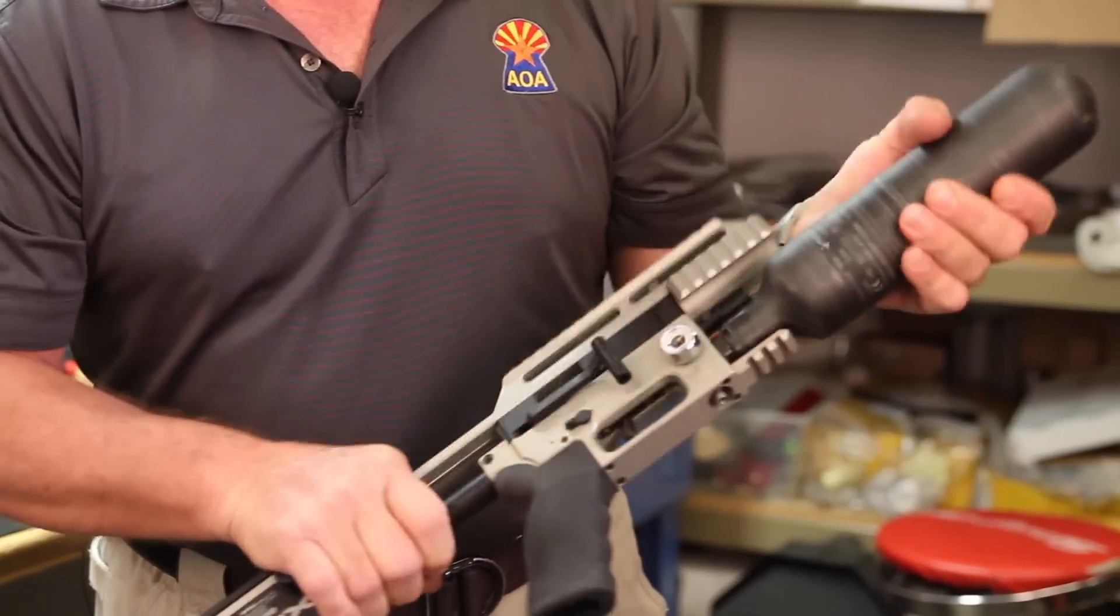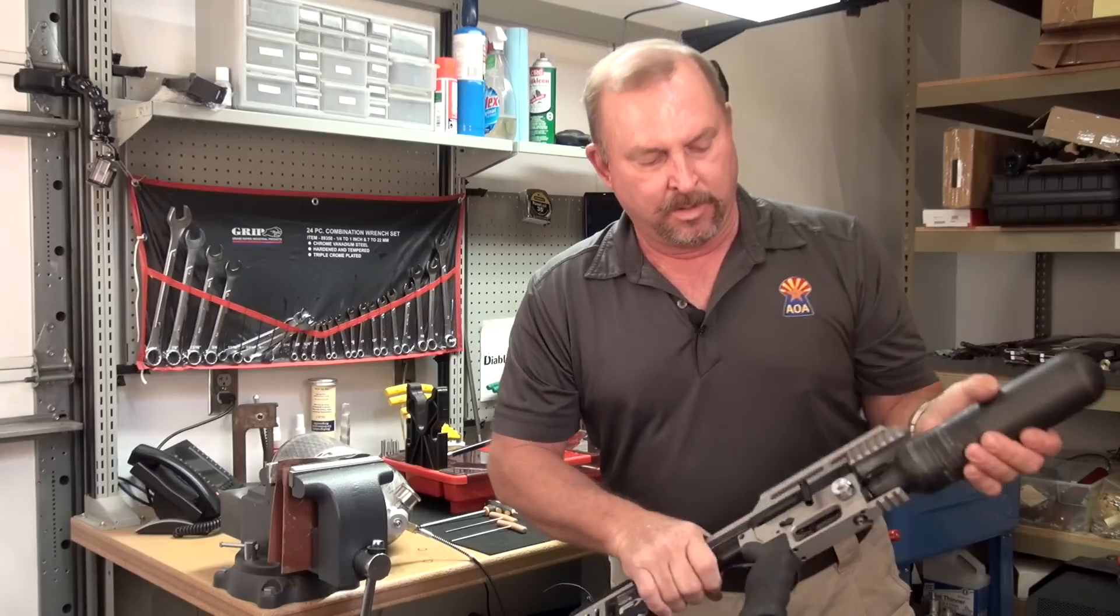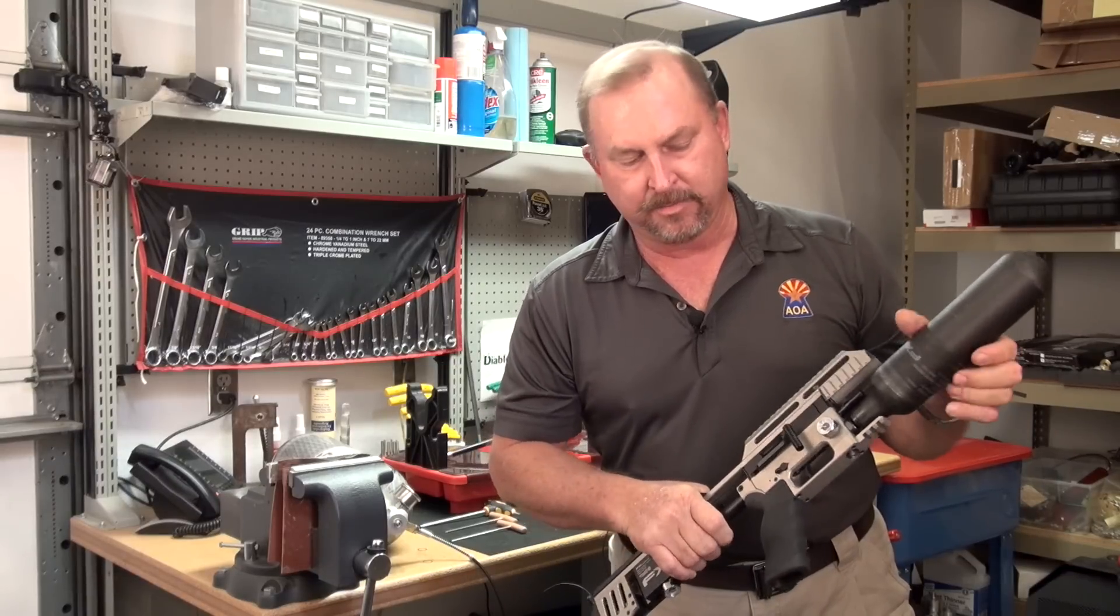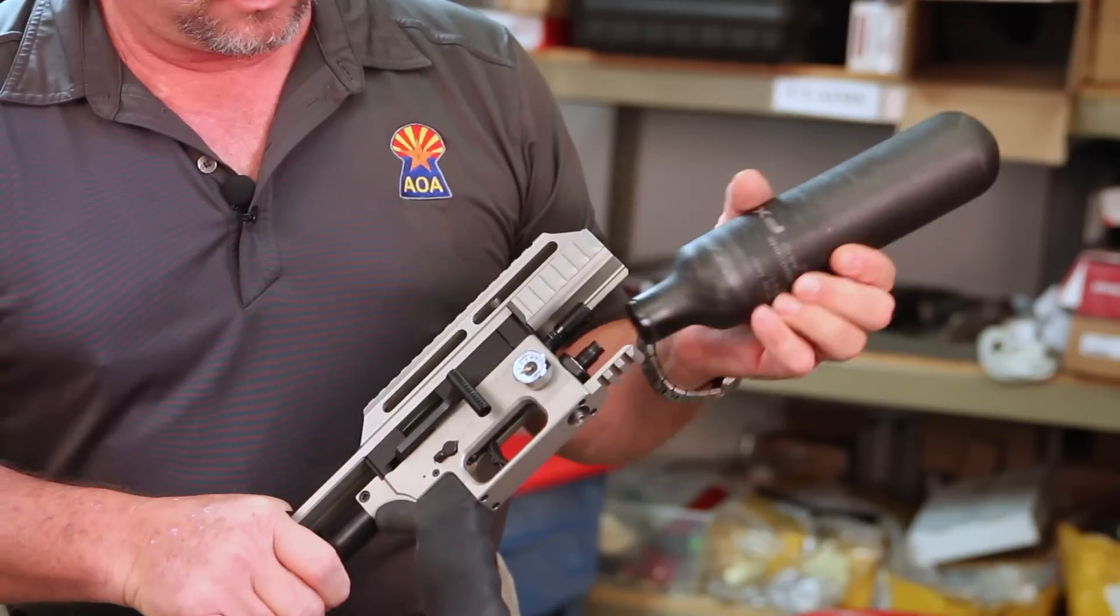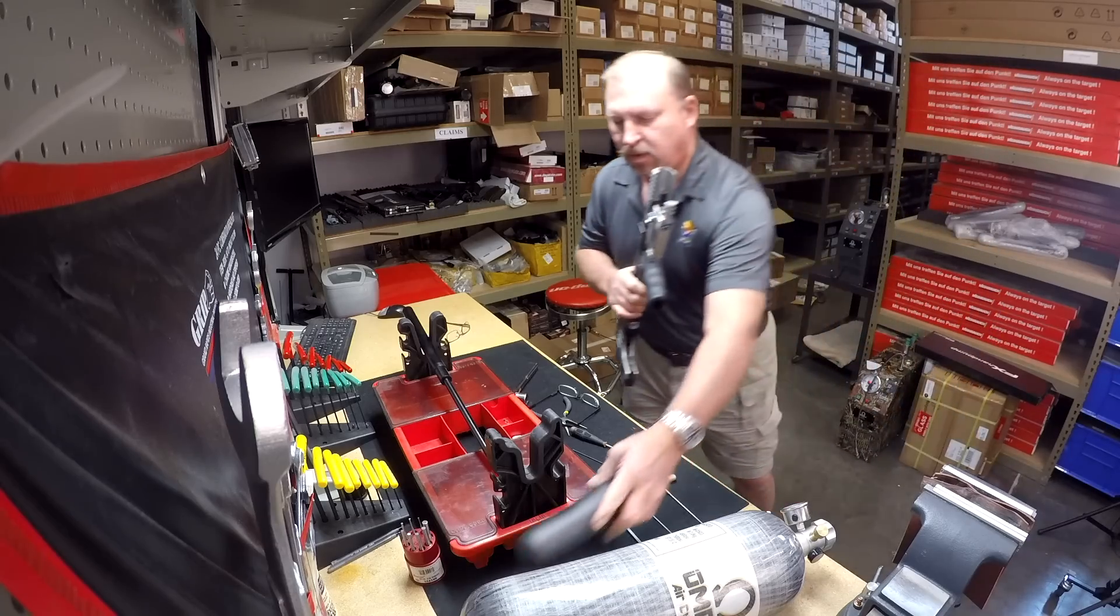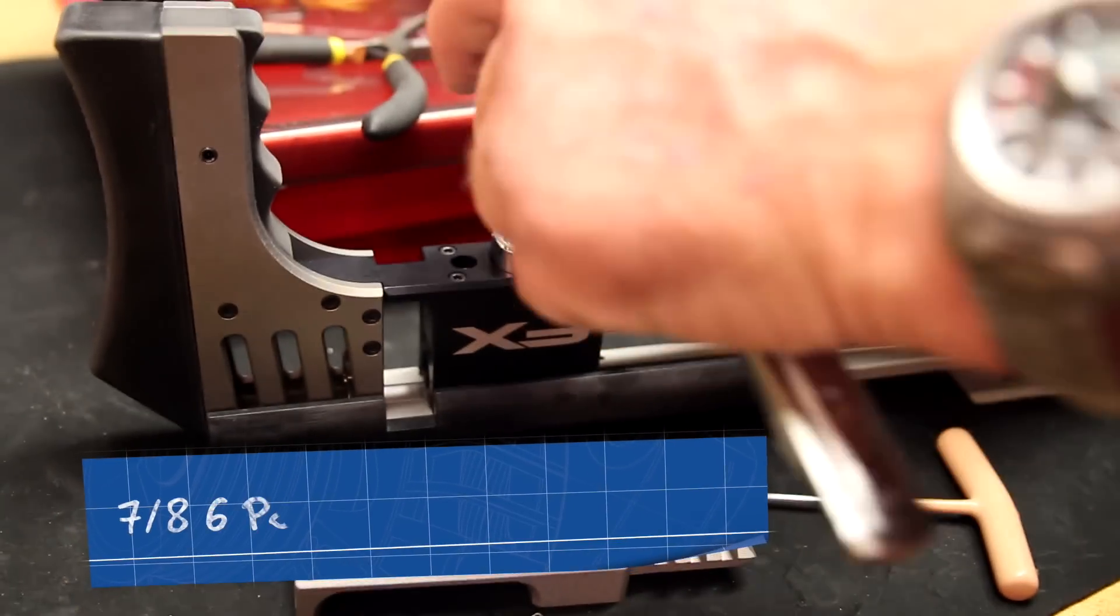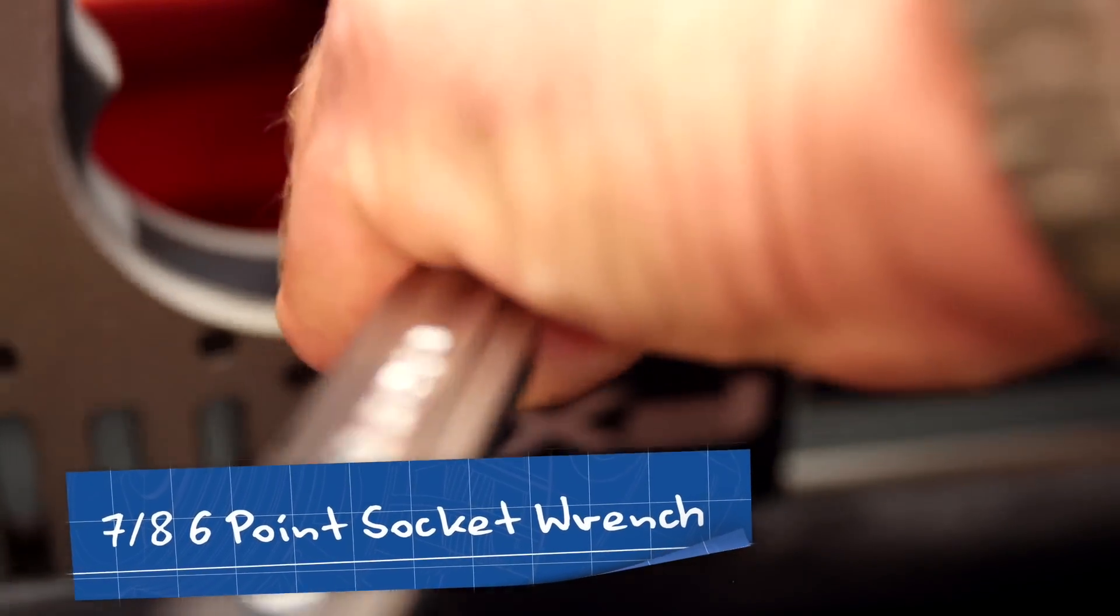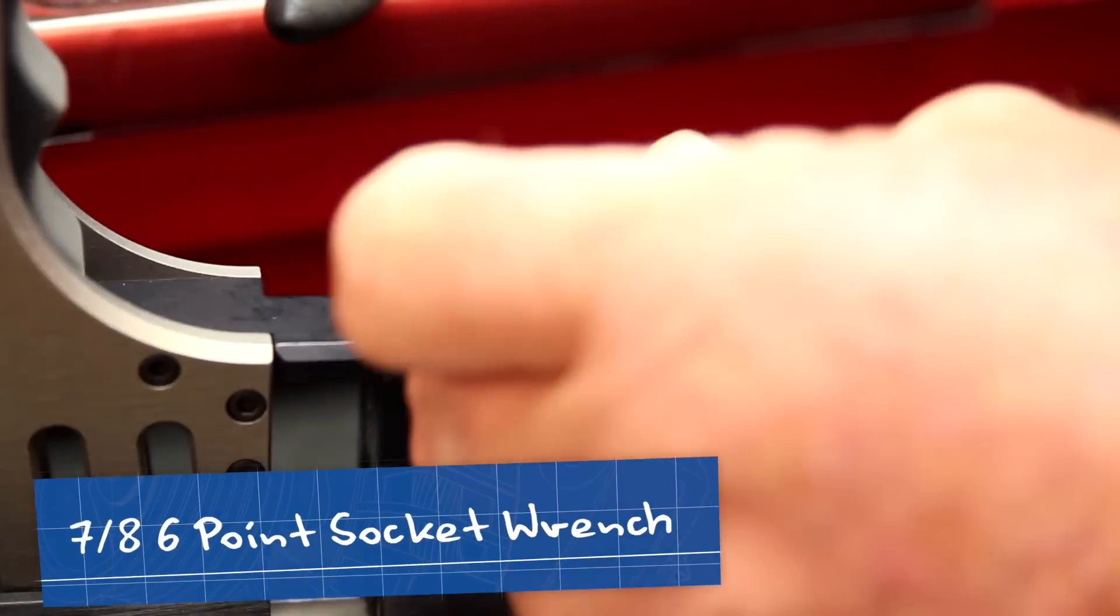Removing the air cylinder, carbon fiber air cylinder. You're going to have a short leak, then it's going to stop. Then finish removing it. Seven-eighths, six-point socket. Just release the gauge and the screw of the gauge. That'll release any pressure that's inside your regulator.